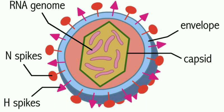In some viruses, the envelope consists of spikes. That is, in some viruses the envelope layer is not smooth — it has some projections called spikes. However, spikes are not present in all envelopes.